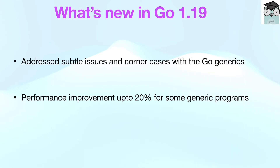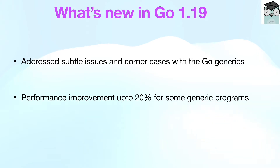Go 1.19 has been released on 2nd August 2022. Let's see what's new in there. According to the Go plan, Go 1.19 refines and improves their massive Go 1.18 release earlier this year. They have focused on addressing the subtle issues and corner cases reported by the community with Go generics.